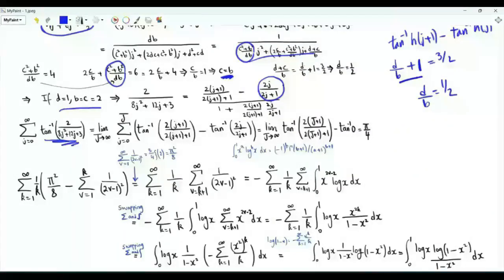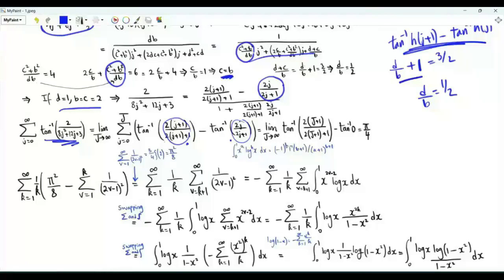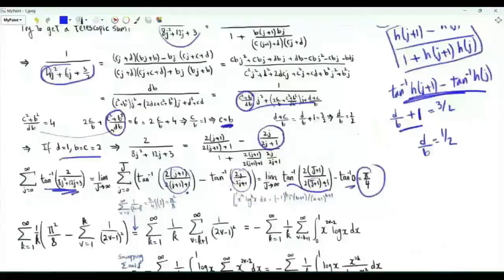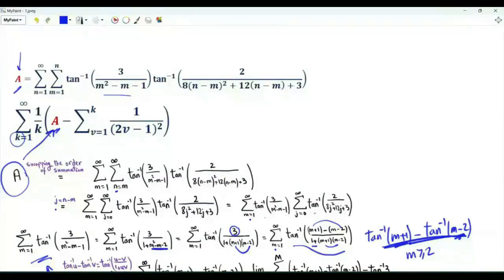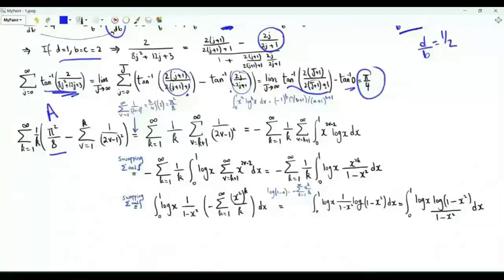The sum over non-negative integer j of this inverse tangent function is a summation j from 0 to big J of this telescoping difference of h(j plus 1) and h(j). Taking the limit as big J tends to infinity, the surviving terms are minus the inverse tangent of h(0), which is 0, and the inverse tangent of (2J plus 1) over (2J plus 1 plus 1), which converges to the inverse tangent of 1, that is pi over 4. The constant a is the product of the two sums: pi over 2 times pi over 4, so a equals pi squared over 8.